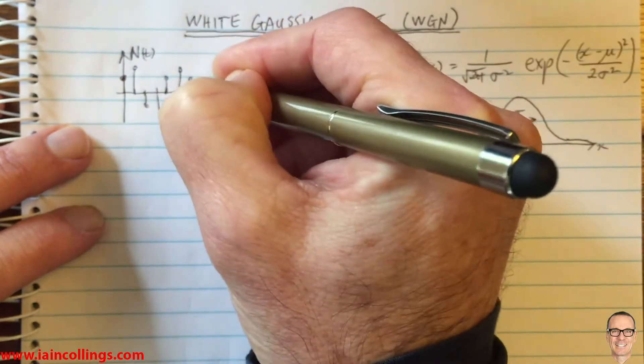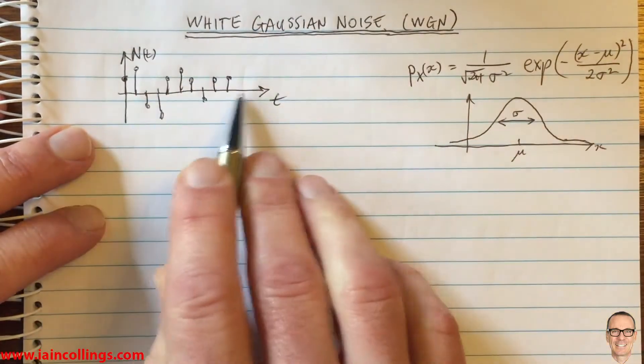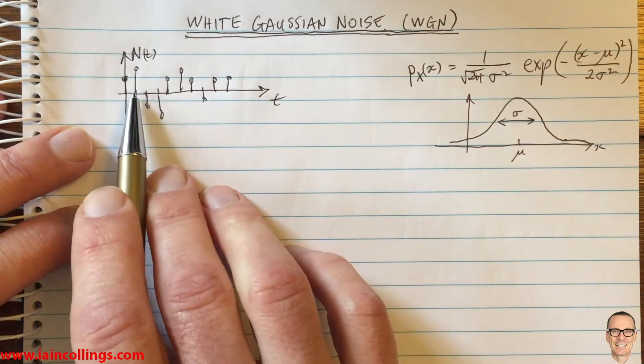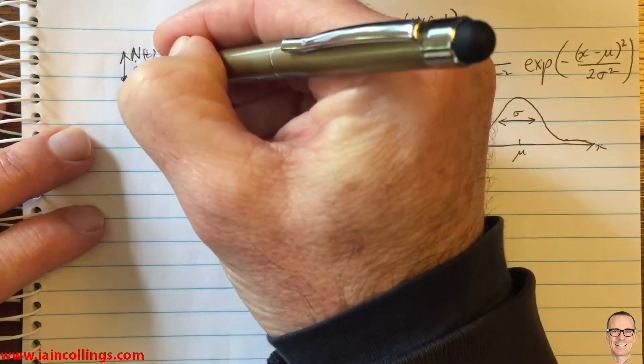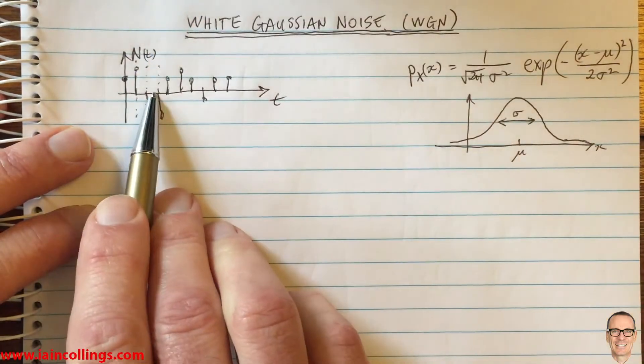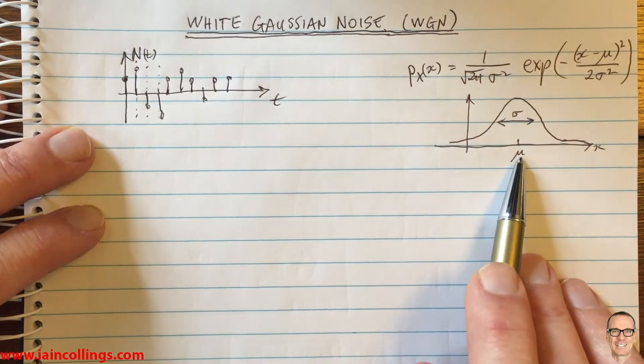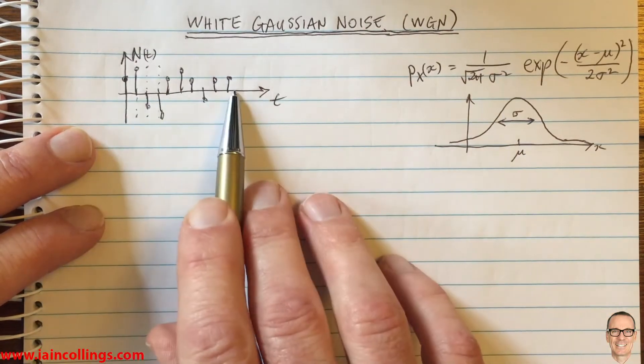This is a random process where we've sampled the noise. Each time sample is a random variable, is the outcome of a random variable. So at each time sample the noise has a distribution of this shape where mu equals zero, and this is a random process.